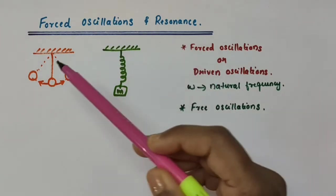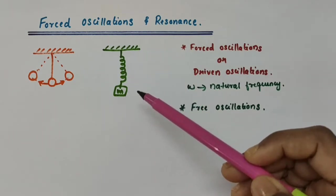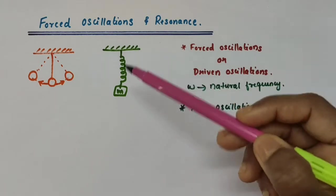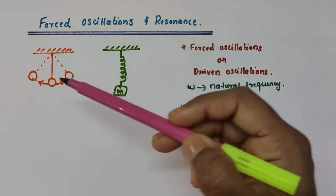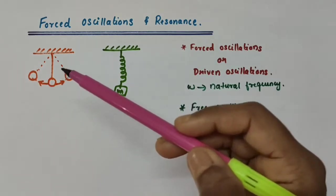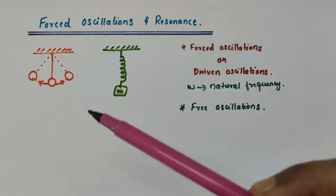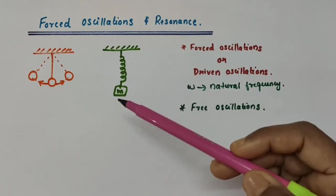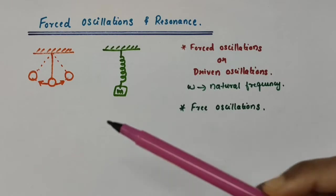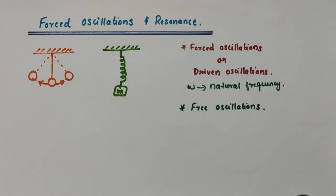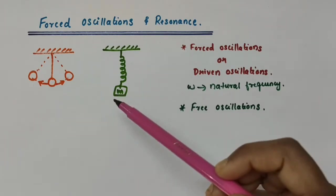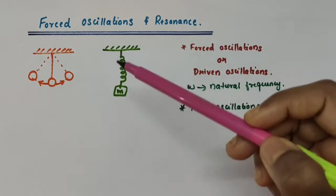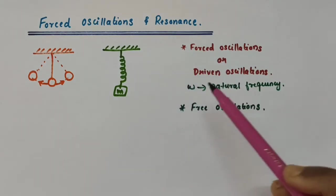When a simple pendulum or a block attached to a spring is displaced from its equilibrium position and released, it oscillates. We have discussed the oscillations of a simple pendulum and a block attached to a spring in our previous video. When these are displaced from their equilibrium position, they oscillate with their natural frequency omega.